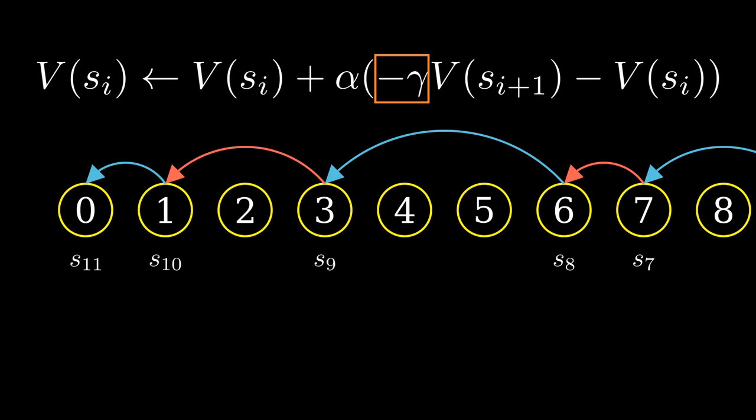The value function is initiated to 0 or small random values with one exception. V0, for the state where one player has lost the game, is fixed to a large negative value. This incentivizes the computer to avoid this game state at all cost.